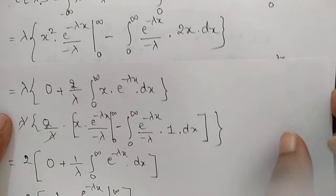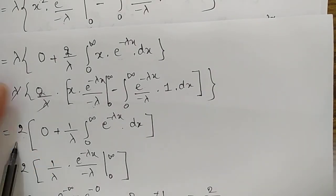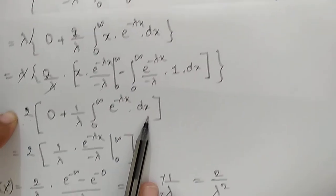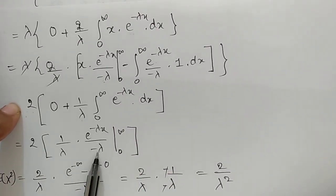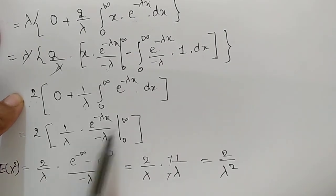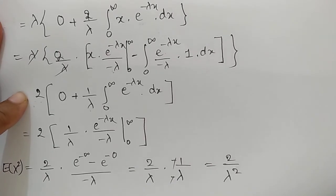The remaining integral is (2/λ)·(1/λ)·∫₀^∞ e^(−λx) dx = (2/λ)·(1/λ)·[e^(−λx)/(−λ)]₀^∞. Substituting limits: e^(−∞) = 0 and e^0 = 1, giving (0 − 1)/(−λ) = 1/λ. Therefore E[X²] = 2/λ².